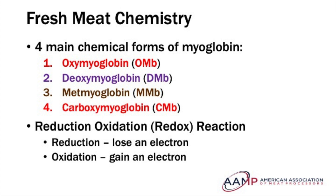Fresh meat chemistry involves oxidation-reduction reactions, or better known as redox reactions. In these chemical reactions, electrons are gained and lost by a specific species. When an electron is lost, it is called a reduction reaction. When an electron is gained, it is called an oxidation reaction.